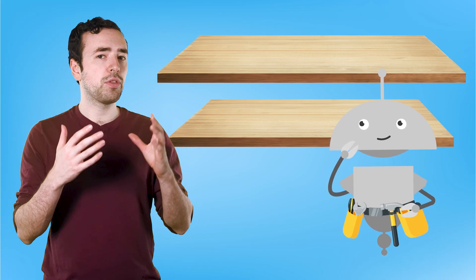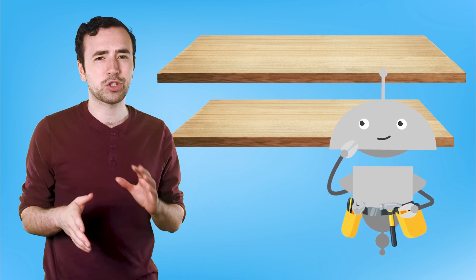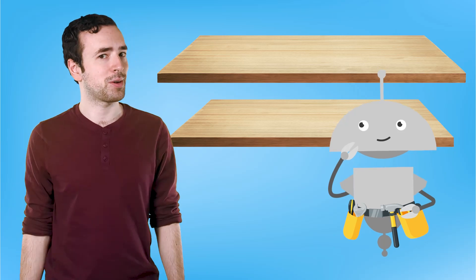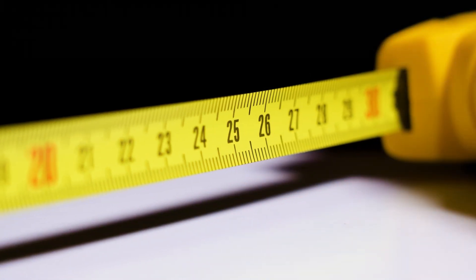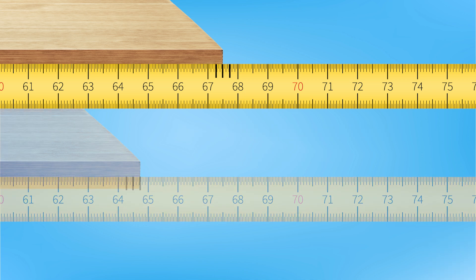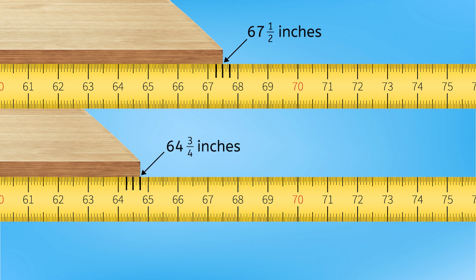Up next are the shelves. Mia's already cut them, but she's not sure which is which. They're pretty long, so our tape measure can help here. This tape measure shows measurements in inches. Pause here to record the length of each shelf in your guided notes. This shelf's length is exactly halfway between the 67 and 68-inch marks, which is 67 and 1/2 inches, while the other shelf is 64 and 3 fourths inches long.